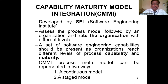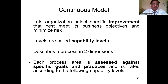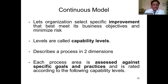The CMMI — Capability Maturity Model Integration — was developed by the Software Engineering Institute. It assesses the process model followed by an organization and grades it. A set of software engineering capabilities should be present as an organization reaches different levels of process capability and maturity. CMMI can be represented in two ways: continuous and staged. The continuous mode lets an organization select specific improvements that best meet its business objectives and minimize risk; its levels are called capability levels.